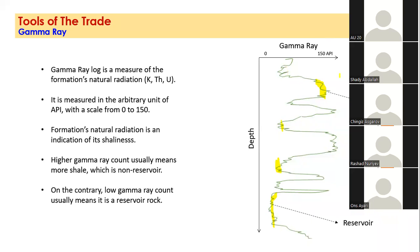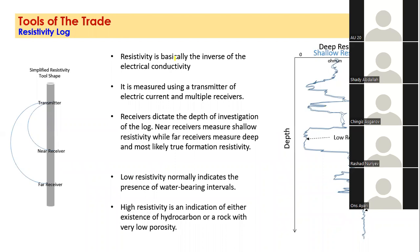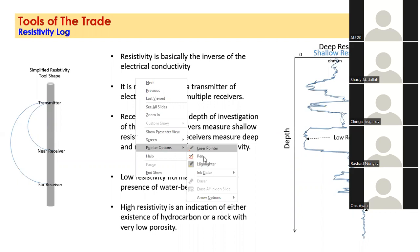The second log is the resistivity log — basically the inverse of electrical conductivity. Saline water is extremely conductive, making it very low in resistivity. Wood, for example, is very low in conductivity and would not pass electrical current, so it's high in resistivity. Low resistivity parts in the reservoir are water-bearing. High resistivity parts can be either oil or gas — because they are very high in resistivity — or they can have very low porosity.